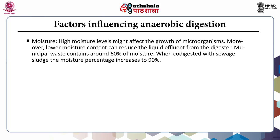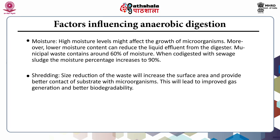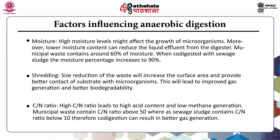Moisture is another important parameter; high moisture levels might affect microorganism growth, while lower moisture content can reduce liquid effluent from the digester. Municipal solid waste generally contains about 60% moisture; when co-digested with sewage sludge, moisture increases to 90%. Minimum processing like shredding or size reduction improves surface area, increasing contact between substrate and microorganisms and enhancing gas generation performance. The carbon-to-nitrogen ratio is also important: a higher C/N ratio leads to high acid content and low methane generation. Municipal solid waste has a C/N ratio of about 50, while sewage sludge has a C/N ratio of 10, so co-digestion gives better gas generation.